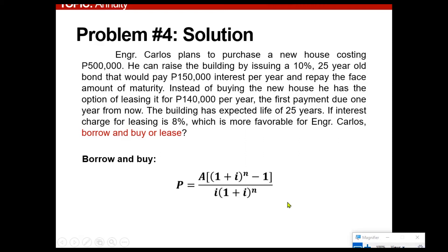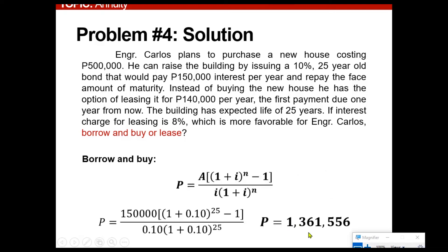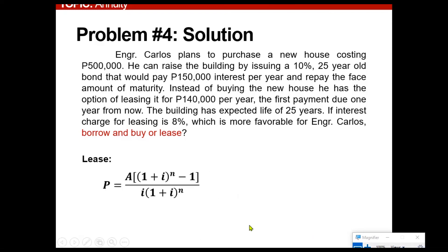Substituting the values, $150,000 and then 10%, 25% of course, minus 1, yields to $1,361,556. If Engineer Carlos leases, the option is lease, substituting the values, $140,000 at 8%, much lesser interest rate, same amount of number of years, yields to $1,497,468.66. As observed, we will recommend for Engineer Carlos that he should borrow and buy since based from these computations, the present worth of that money would be lesser if he just borrow and then buy instead of leasing.